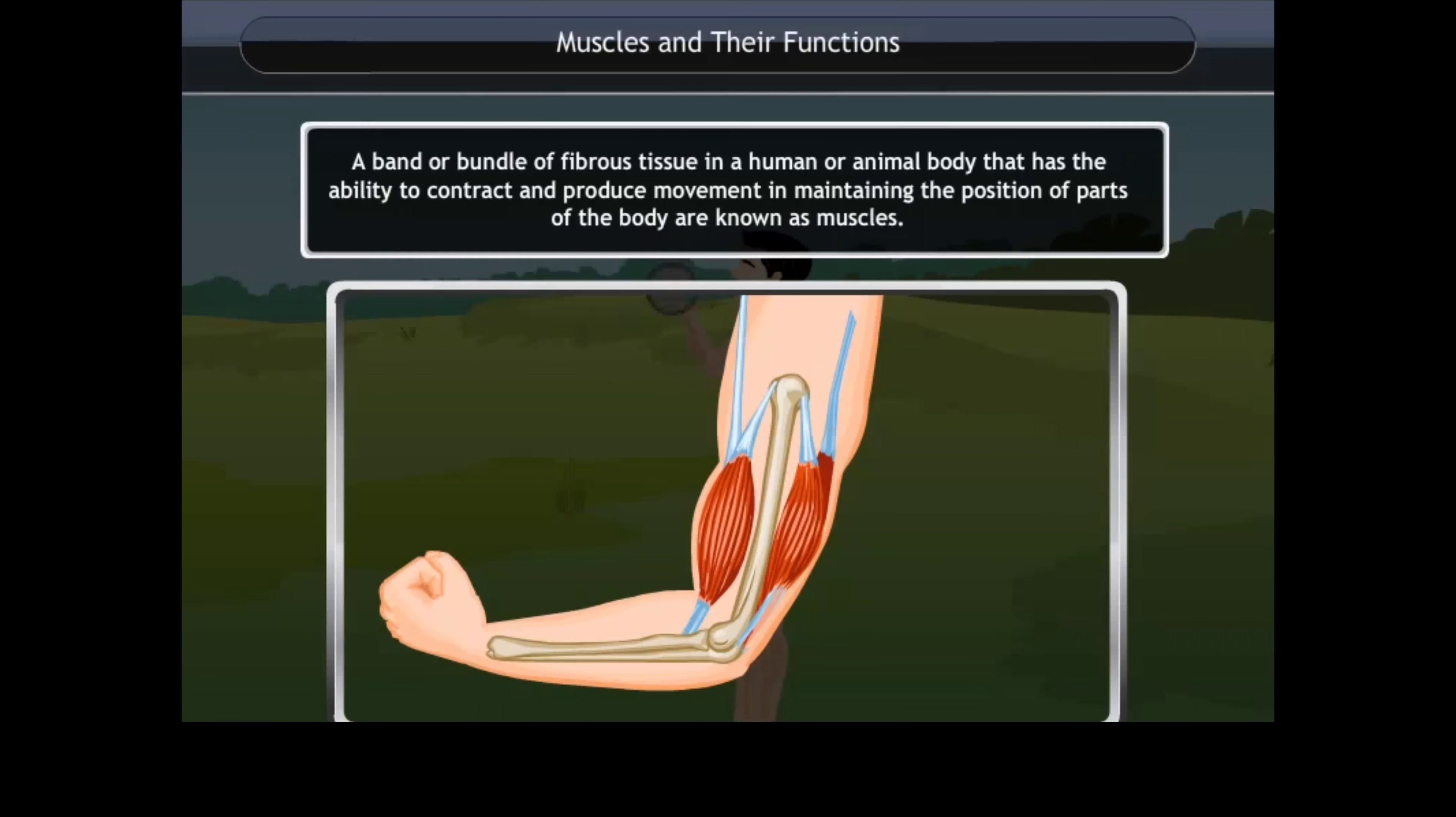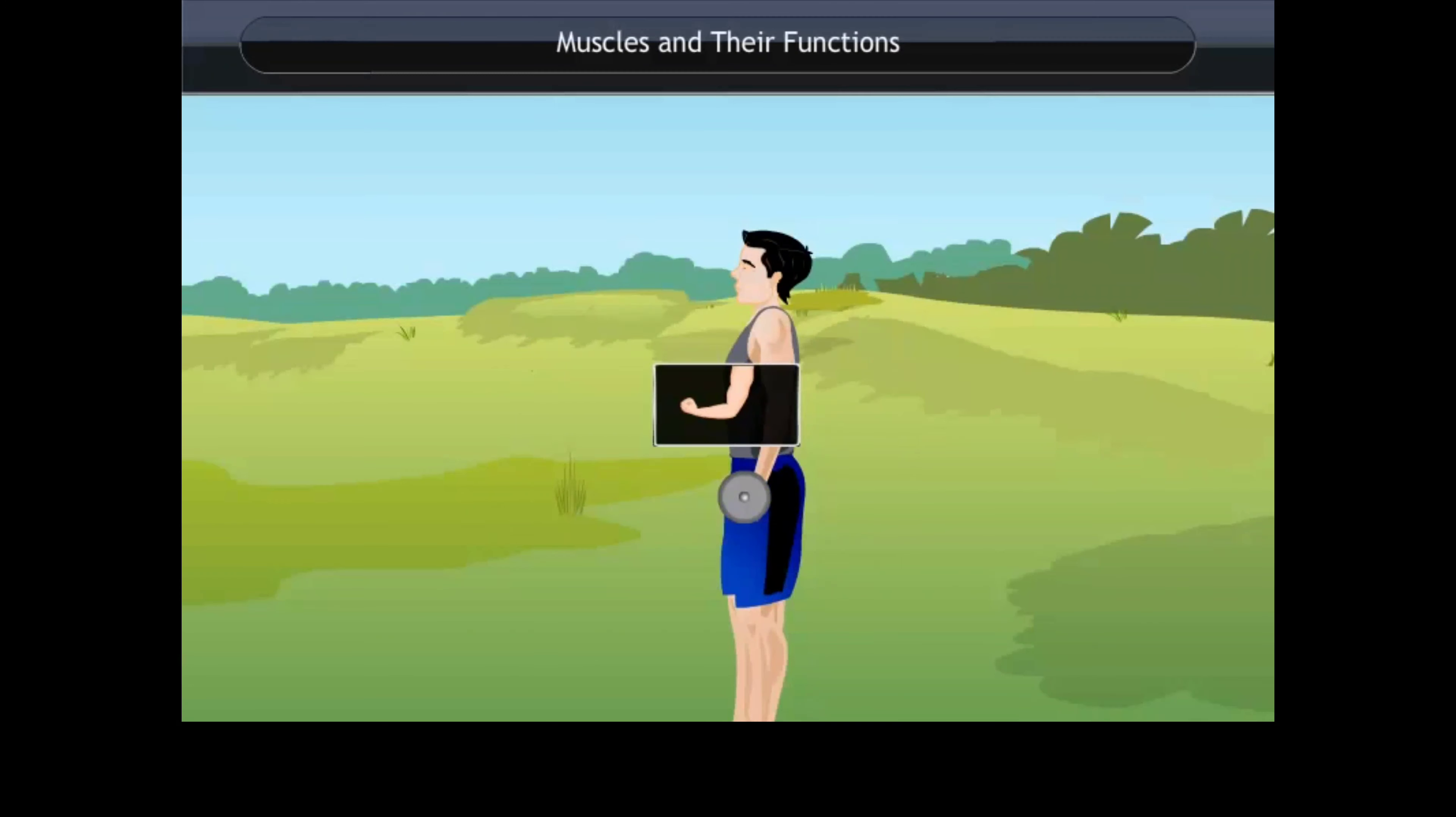Muscles and their functions: A band or bundle of fibrous tissue in a human or animal body that has the ability to contract and produce movement in maintaining the positions of parts of the body are known as muscles.